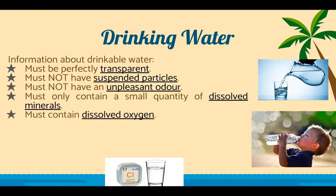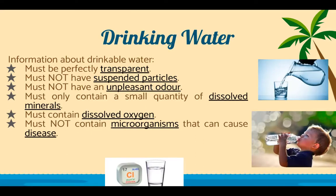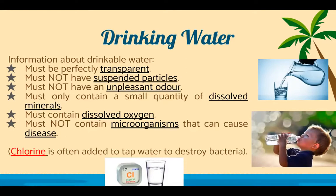Drinkable water must contain dissolved oxygen and must not contain microorganisms that can cause disease. Chlorine is often added to tap water to destroy bacteria. Can you think of another time you've heard of chlorine and water together? Your pools — pools should have some substance to kill bacteria, especially because pools are exposed to the environment. The chlorine is put there to neutralize or destroy bacteria and microorganisms that can be harmful.